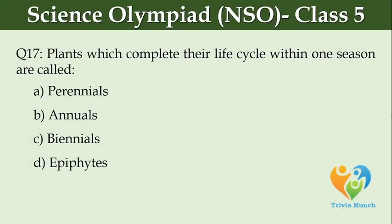Plants which complete their life cycle within one season are called dash. Option A: perennials, Option B: annuals, Option C: biennials, Option D: epiphytes.